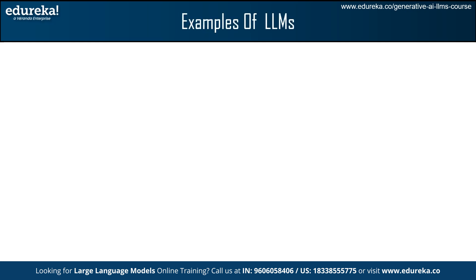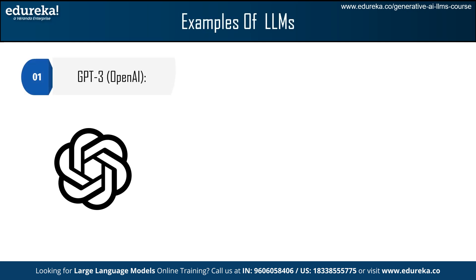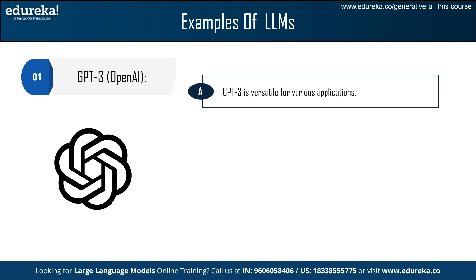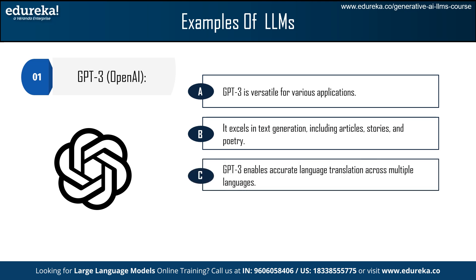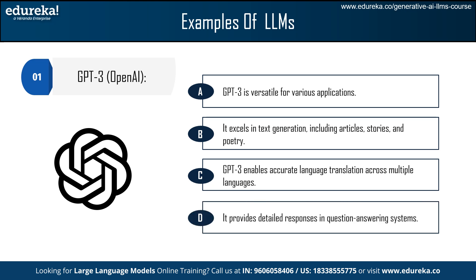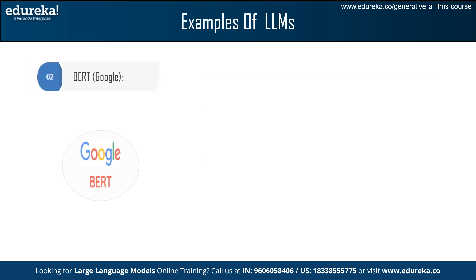Let me give you a few examples of large language models. The first one is GPT-3 from OpenAI. GPT-3 is versatile for various applications — its impressive capabilities make it suitable for a wide range of uses. It excels at text generation tasks such as generating articles, stories, and poetry. GPT-3 is also utilized for language translation tasks, enabling accurate and contextually relevant translations across multiple languages. Additionally, it is employed for question-answering systems, where it can provide detailed and informative responses to user queries.